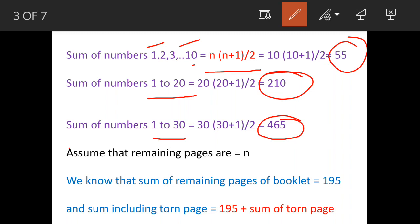Now, suppose that the remaining pages on the book are n and we know that sum of the remaining pages of the book is given as 195 and now this 195 does not include torn page. The page which is missing is not included in this 195. So if we add this torn page, so the sum will be 195 plus the torn page.